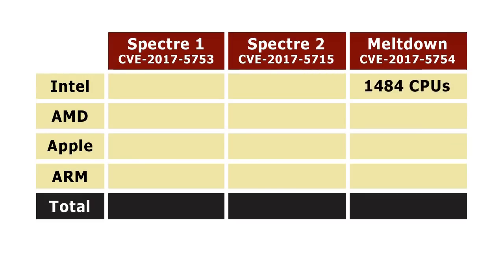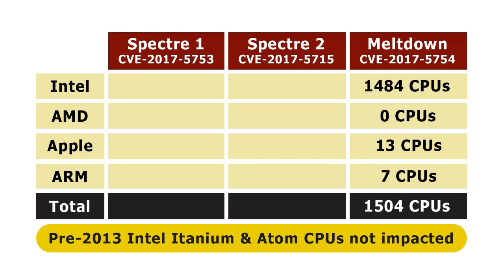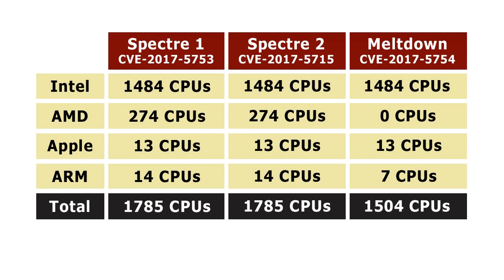The Spectre and Meltdown design flaws exist in hundreds of different microprocessor models, compromising the security of many desktop PCs, laptop PCs, tablets, and smartphones. Meltdown exists in every Intel microprocessor manufactured since 1995, with the exception of Itanium and Atom chips made before 2013. It also impacts some Apple systems-on-a-chip used in tablets and smartphones, and some ARM chips used in mobile devices. Meltdown does not, however, impact any processors made by AMD. The two Spectre vulnerabilities impact processors made by all chip manufacturers.